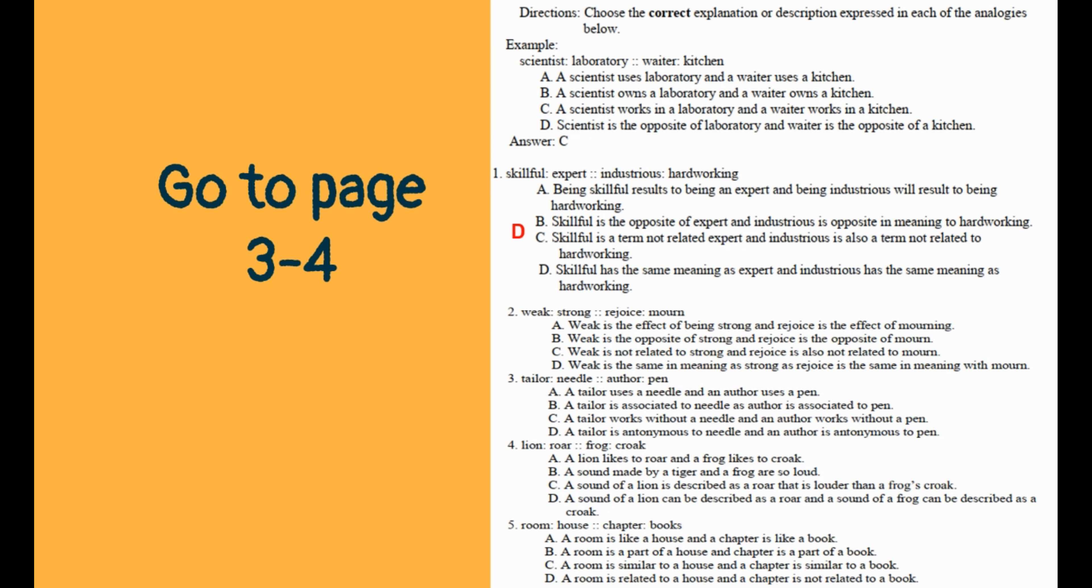Number two: weak is to strong as barren is to fertile. The correct answer is letter B. Weak is the opposite of strong and barren is the opposite of fertile.